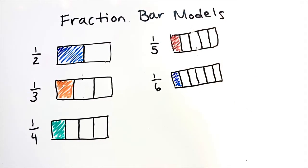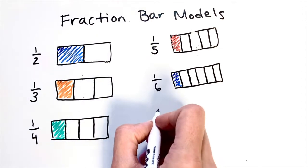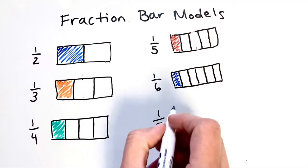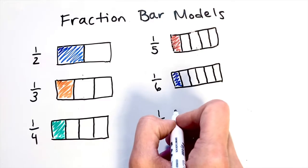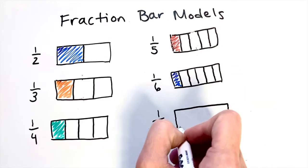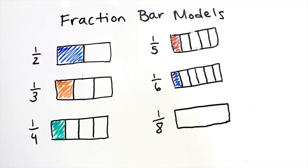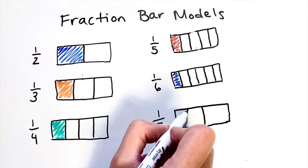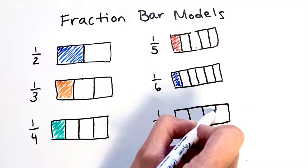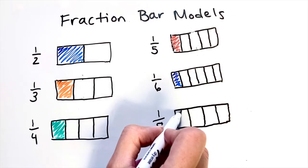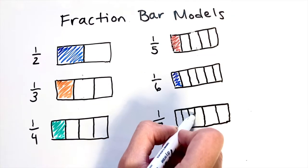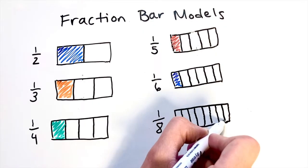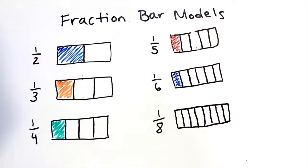Finally, let's draw one eighth. One eighth seems like it would be tricky because it has so many pieces, but it's actually one of the easier fractions to draw. Start by cutting your rectangle in half, then cut each of those pieces in half — now we have fourths. Then cut each of those fourths in half to create eighths. To show one eighth, we simply need to shade in one of these pieces.